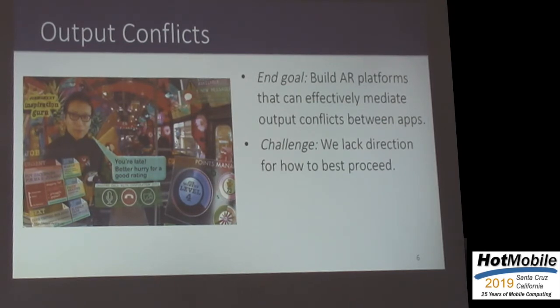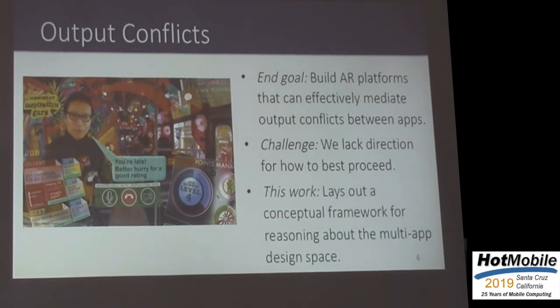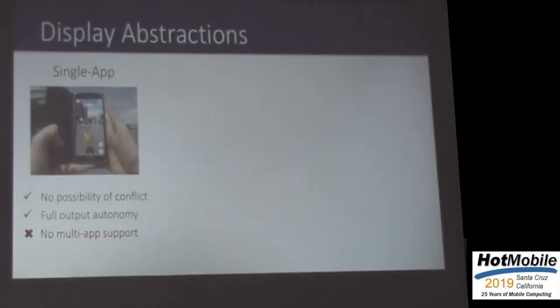So rather than prematurely implementing any specific single design path, in this work we're laying out a conceptual framework for how to think about the multi-app design space more generally, in the hopes that we can inform future efforts for actually building out these kinds of systems. One of the first things to consider is what kinds of display abstractions actually make sense for AR, because the interface that a platform provides for apps to display content ultimately bounds the space of output behaviors these apps can exhibit. Traditionally we see a single-app abstraction employed today, which is great for really immersive apps that require the user's undivided attention — but clearly this doesn't help us with the goal of multi-app support.